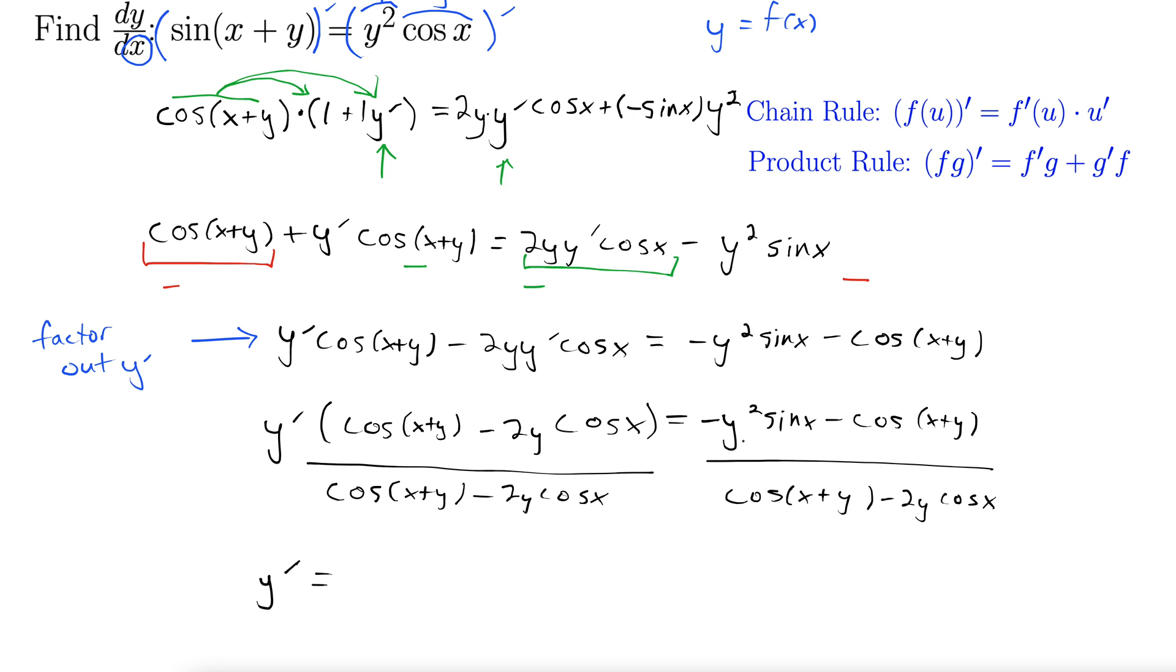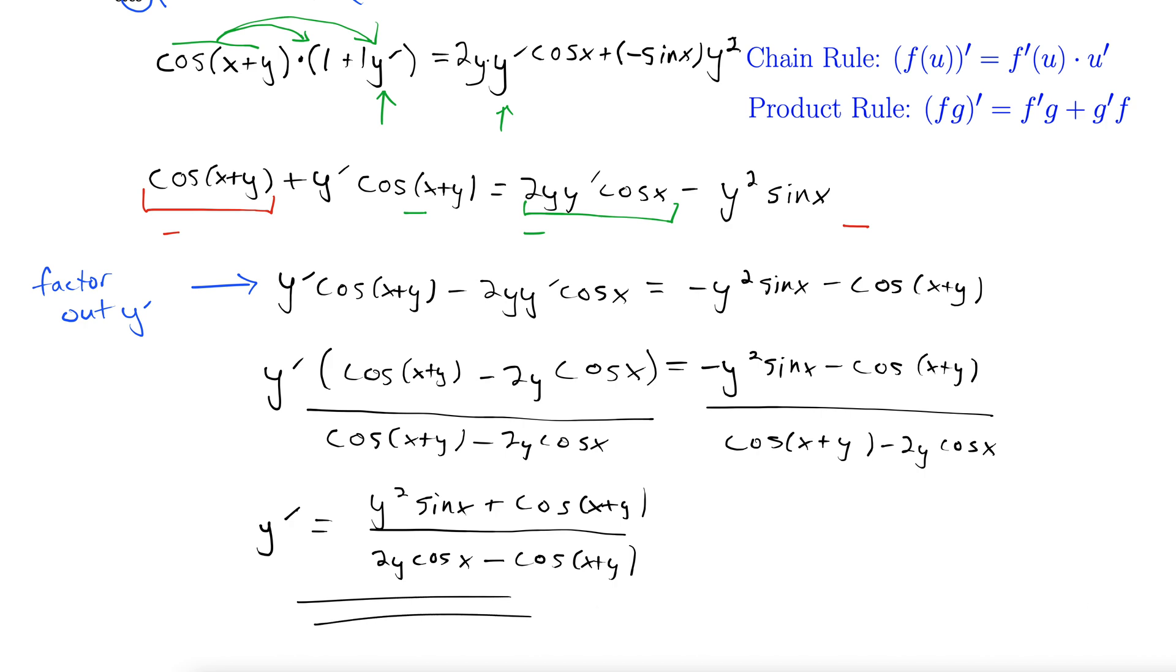So y prime equals, the way I'm going to do that is factoring out a negative from the top and the bottom. So that makes the top positive. So y squared sine x plus cos x plus y and then I factored a negative out of the bottom. When I did that both the negatives canceled out in the front. So that gives us 2y cos x minus cos x plus y. And there's our final answer.